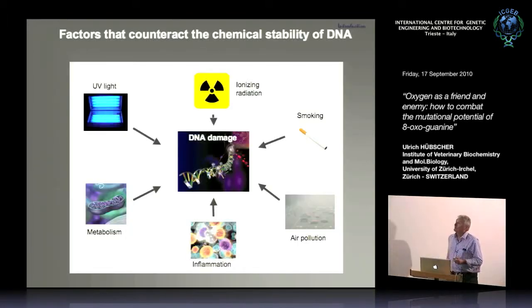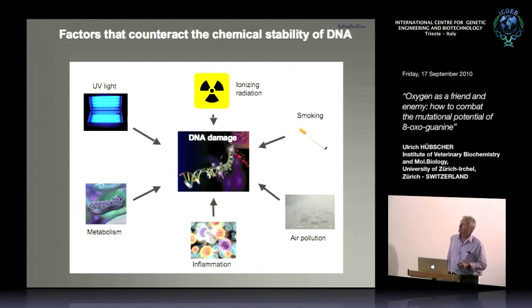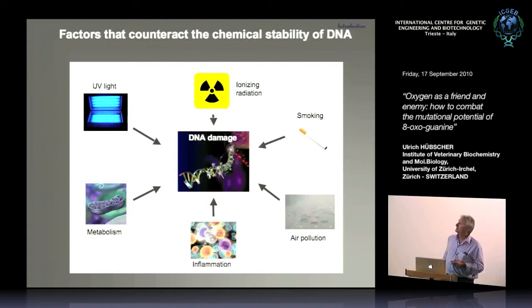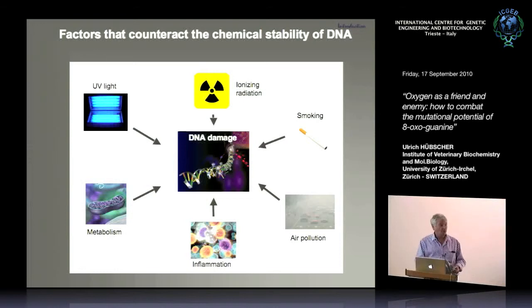Factors that can counteract the chemical stability of DNA are many: UV light, ionizing radiation, smoking, air pollution, inflammation, as well as metabolism.